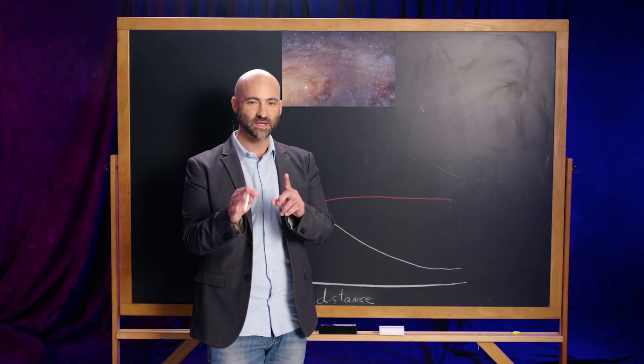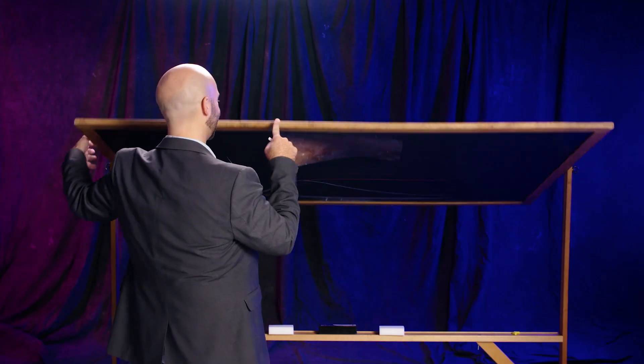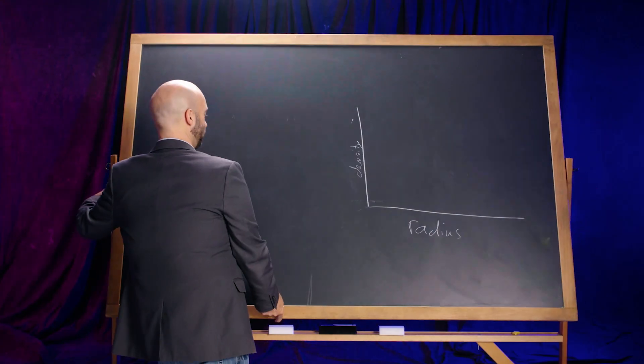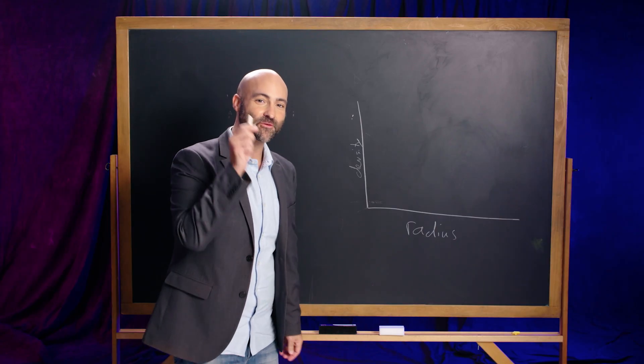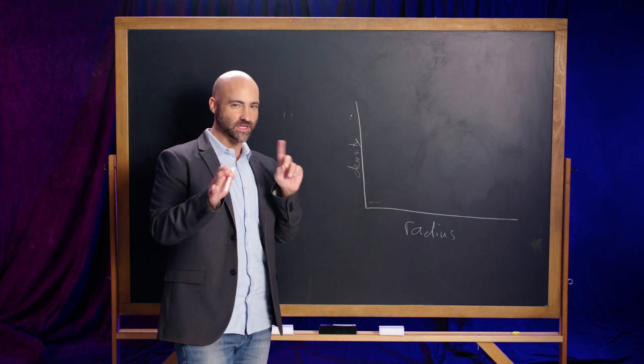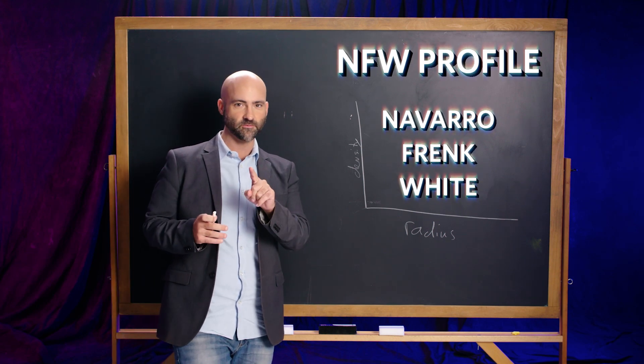Let me show you something cool — this is one of those fancy chalkboards that spin up! What we've discovered is that every single galaxy in the universe is surrounded by a ball of dark matter, something we call a halo. Every halo in the universe shares a common structure, a common shape, something we call a universal density profile. This one is called the NFW profile, for Navarro, Frenk, and White — the three astronomers who figured it out.